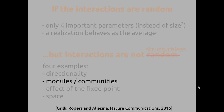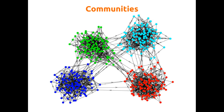In the next part, we're going to discuss the effect of having modules or communities. You probably know that sometimes networks have strong communities — a group of nodes that interact strongly within and weakly between.